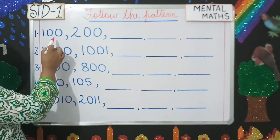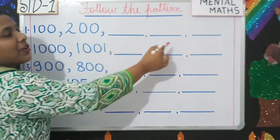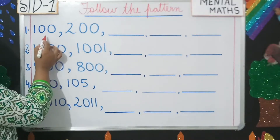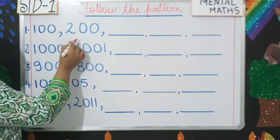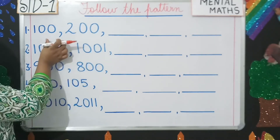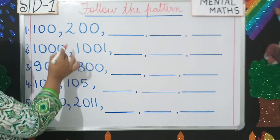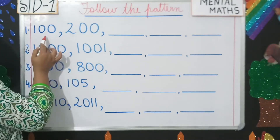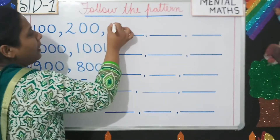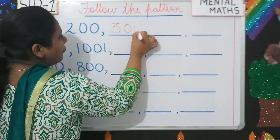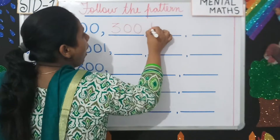Number one: 100, 200 — then three dashes are given. What can you find here, students? After 100 it is written 200, so the pattern being followed is a gap of 100. So after 100, 200, it will be 300, then 400.